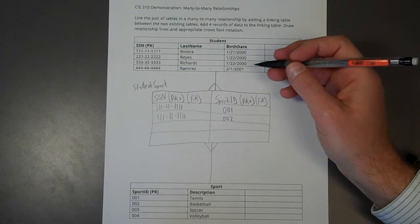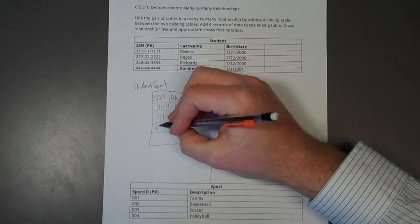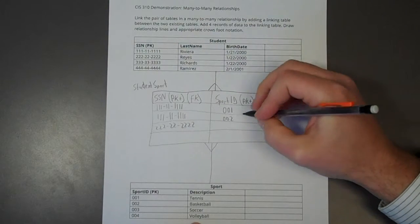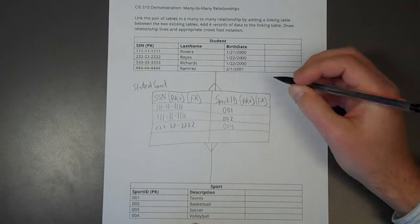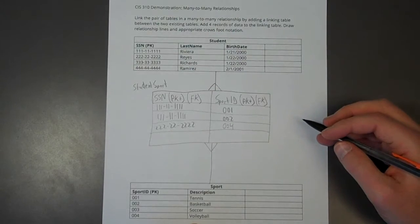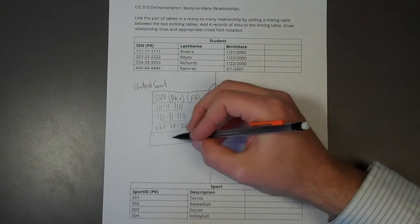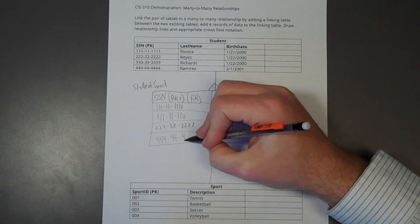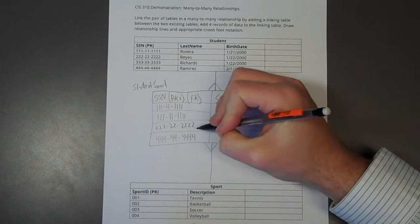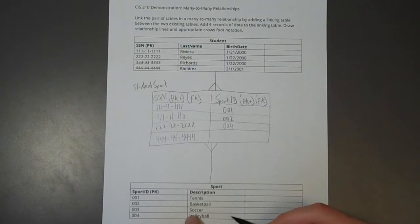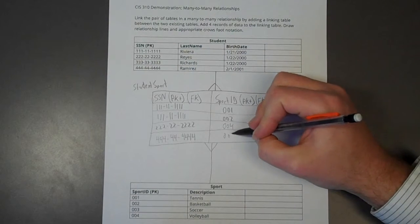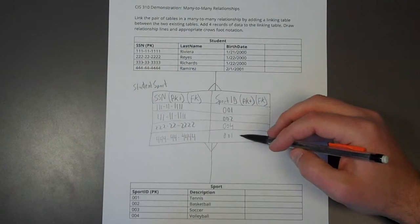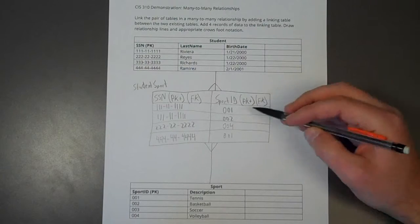Let's add a couple more. Let's say that Reyes is a volleyball player. And then we have another student that's playing on the tennis team and that's Ramirez. So Ramirez's social security number is this. And Ramirez is playing, what did I just say, tennis. So over here. So again, I have a duplicate. I have 001 and 001, but that's okay because this is a member of a composite key.